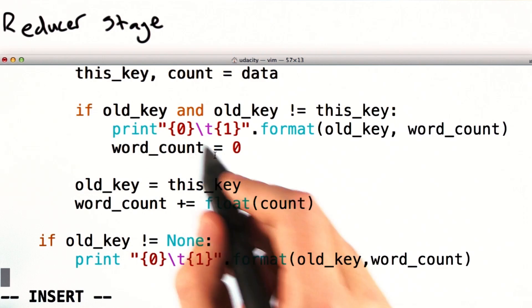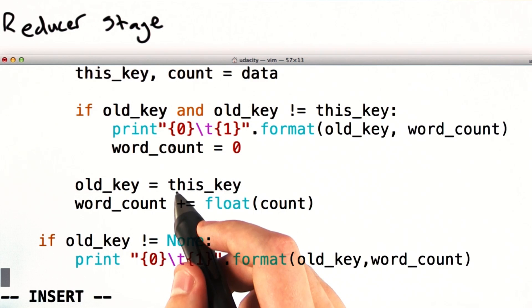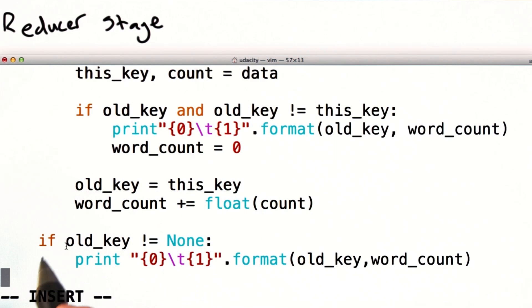You'll note that this implementation will not emit a key value pair for our final key. Because of that, we have to include this final bit of code down here. So, if old key is not equal to none, let's print out one final key value pair.